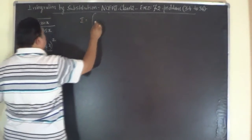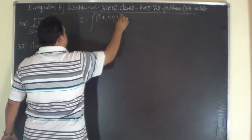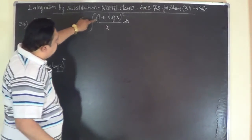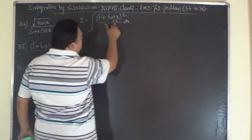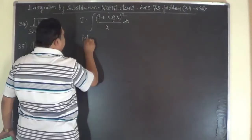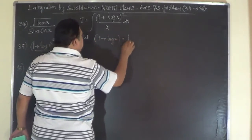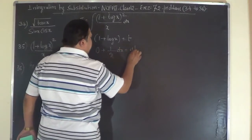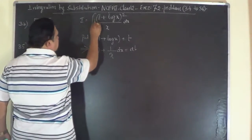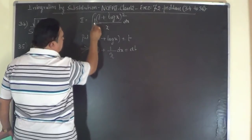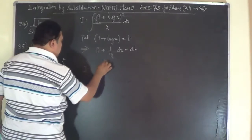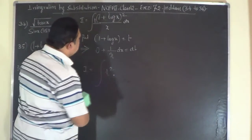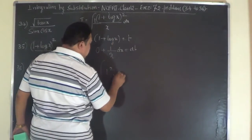For problem 35, i equals the integral of (1 + log x)² divided by x dx. If you have 1 by x dx as a component, it is better to substitute the log term. Put 1 plus log x equal to t. Differentiating, 1 by x dx equals dt. So 1 plus log x whole square becomes t square, and 1 by x dx is replaced by dt.